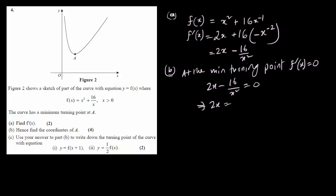Let's solve this. 2x equals 16/x². Cross multiplying gives x times x², which is x³, equals 16/2, which is 8. Therefore x equals the cube root of 8, which is 2.